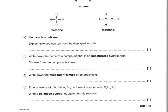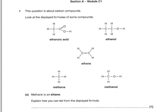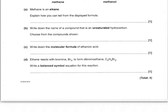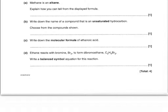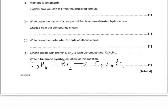Write down the molecular formula of ethanoic acid. Looking at the displayed formula, there are two carbons (C2), four hydrogens (H4), and two oxygens (O2) — you can write those in any order. Then, ethene reacts with bromine to form dibromoethane — write a balanced symbol equation. If there's only one mark, it's already balanced when you write it out. Ethene is C2H4, bromine is Br2, giving C2H4 + Br2 → C2H4Br2.